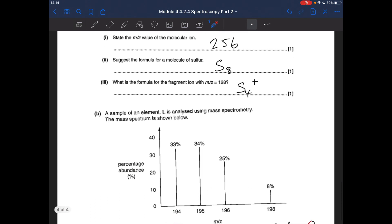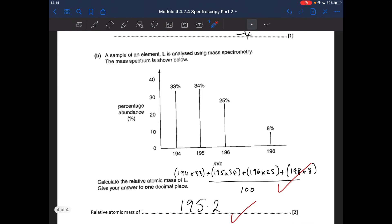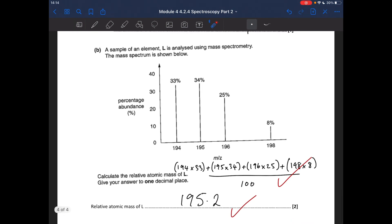And then part B, sample L is analyzed using mass spectrometry, mass spectrum shown below, and it's just a typical calculate the relative atomic mass of L. Answer has to be to one decimal place. So we've got the four isotopes, relative isotopic masses, percentage abundance, so it's the sum of the isotopic mass times the abundance, plus that, plus that, and so on, divided by 100, because we've got percentage abundance, and so to one decimal place, you should have got, hopefully got, 195.2.